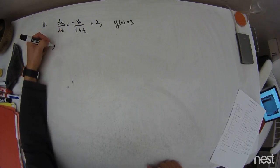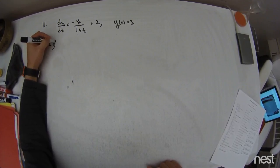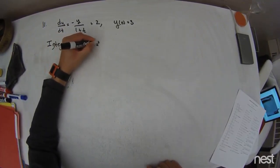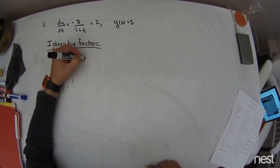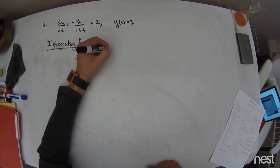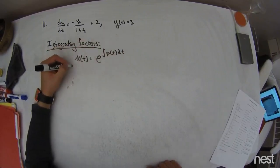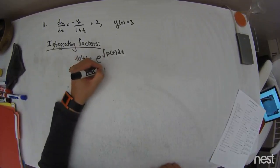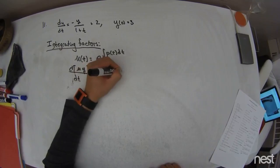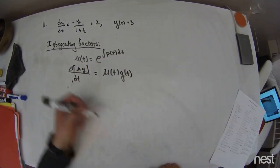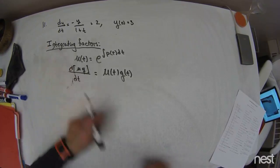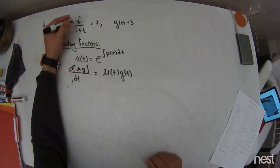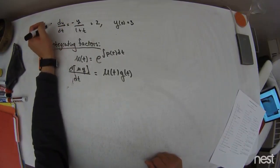So I just start with integrating factors, and for integrating factors there are a couple things that I have to remember. One is that mu of t is equal to e to the integral of p of t dt, and the next is that the derivative of mu times y with respect to t is equal to mu of t times maybe g of t. What I need to remember is that it assumes the ordinary differential equation is in standard form.